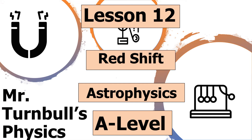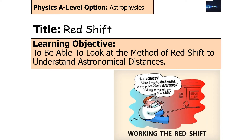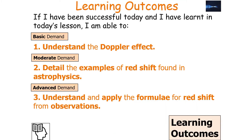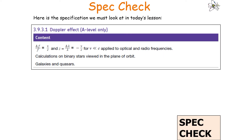Hello and welcome to today's lesson on redshift, which is part of the astrophysics topic in AQA A-level physics. In today's lesson we're going to look at the method of using redshift to understand astronomical distances. We should be able to understand the Doppler effect, detail examples of redshift found in astrophysics, and understand and apply the formulae for redshift from observations. We're looking at specification section 3.9.3.1: the Doppler effect.